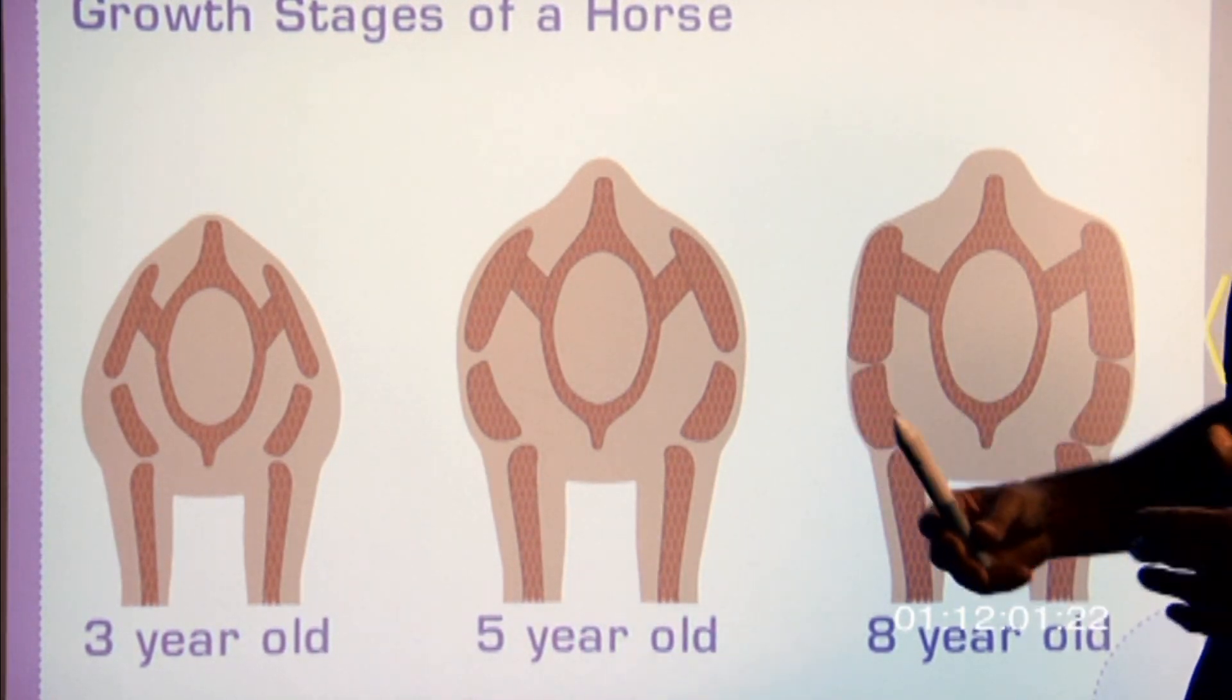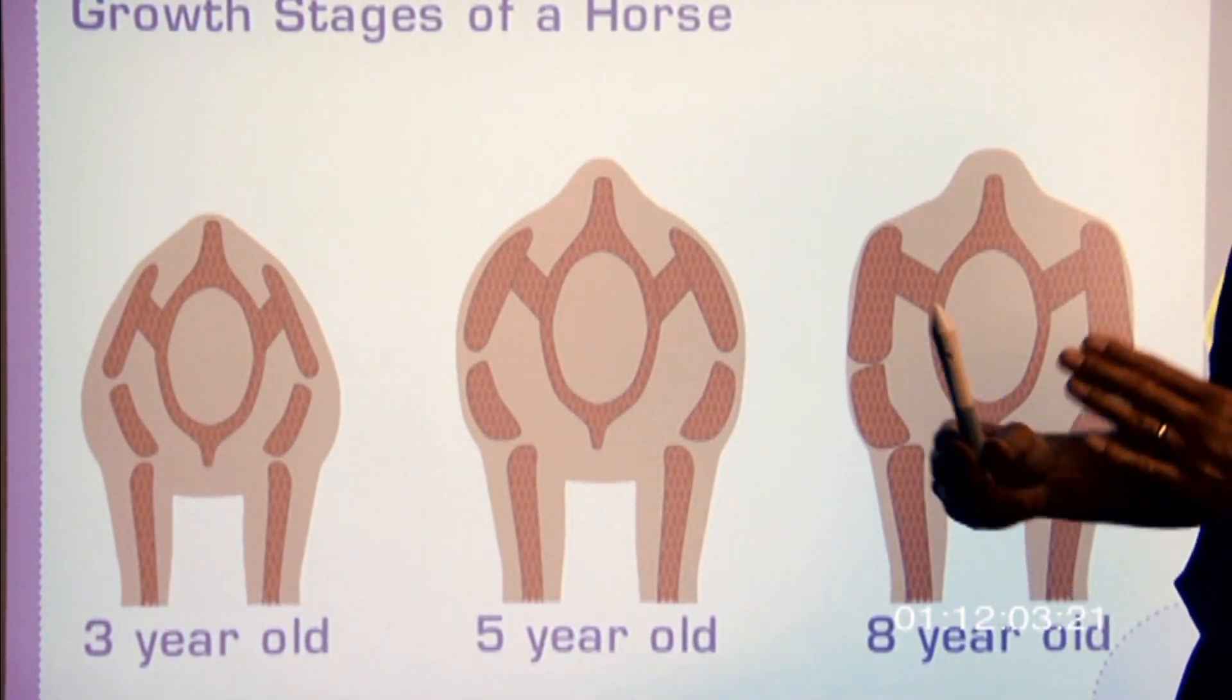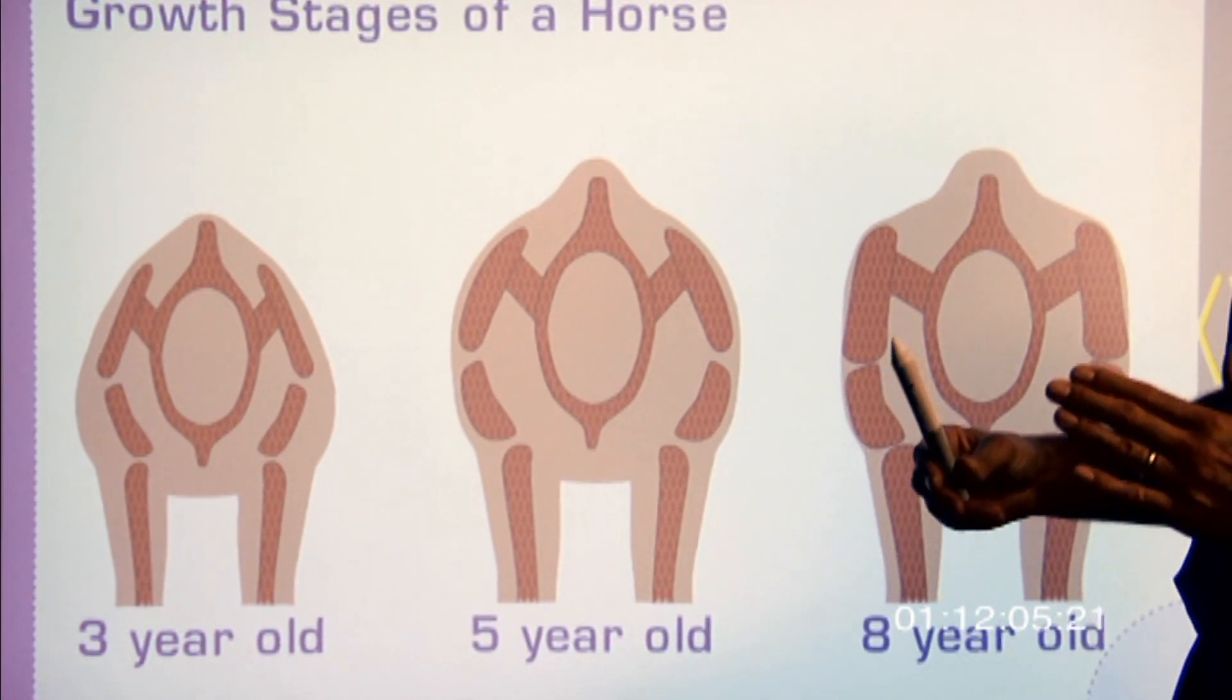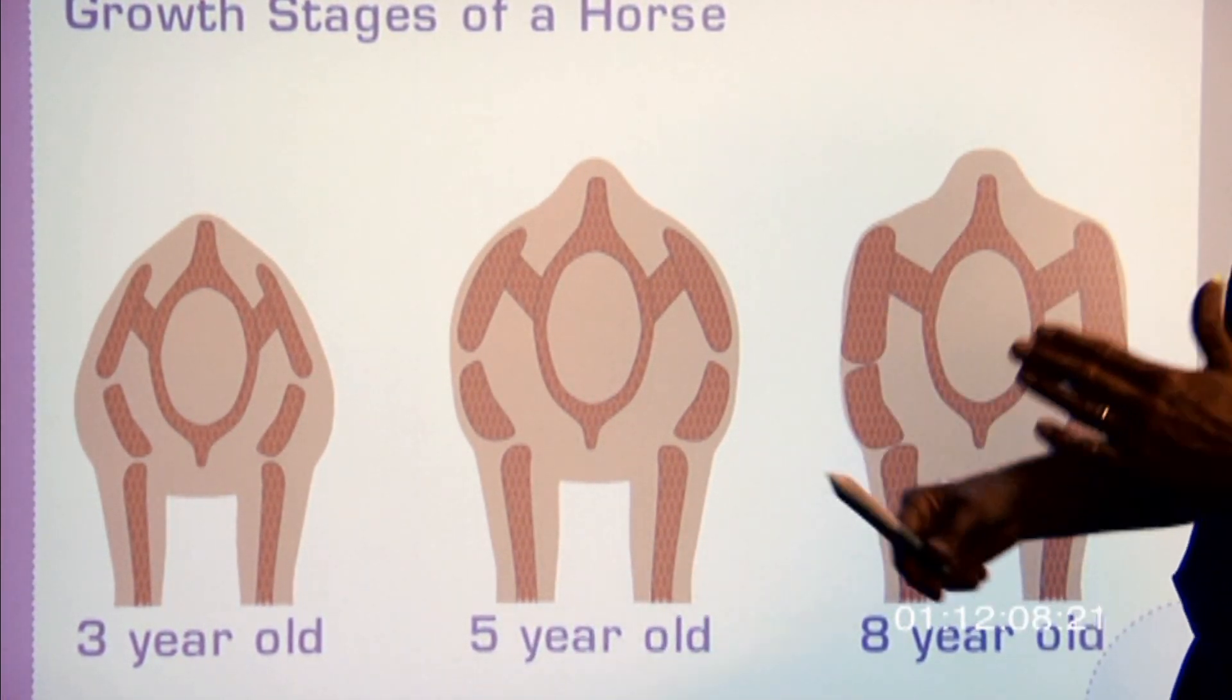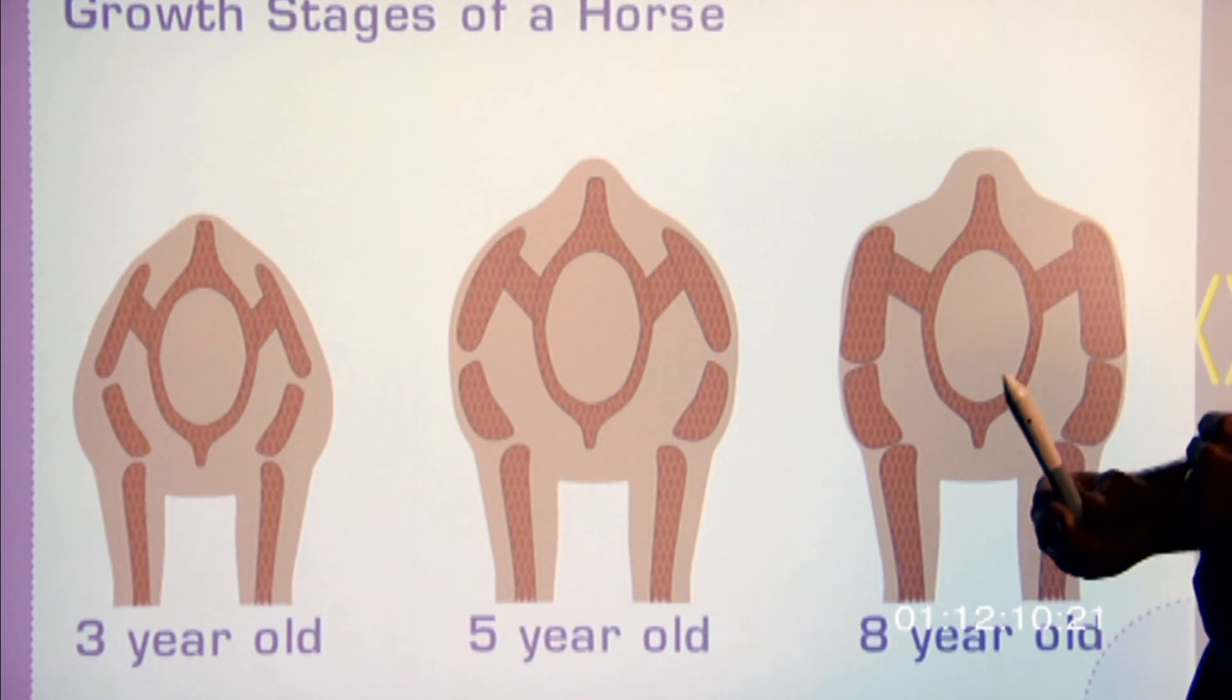And on the horse, when the shoulders get wider, that relates to the tree width. Because the shoulders move six to eight inches underneath and through the saddle, tree width.